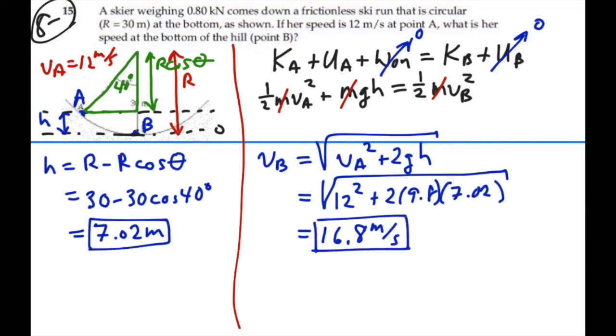So using the one equation to rule them all, the velocity, the speed at point B is 16.8 meters per second.